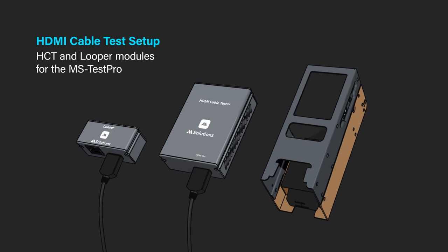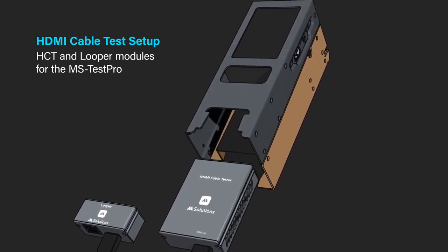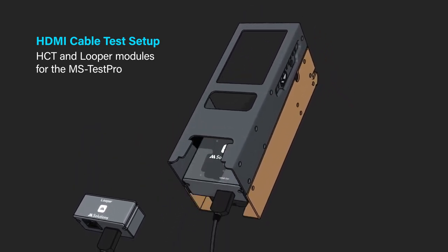Slot the HCT module into the base of your tester, ensuring the module connects securely into the tester's communication port inside. Turn your tester on and wait for the boot sequence to complete, where you will then see the HDMI cable test menu.